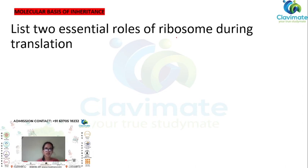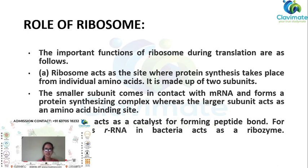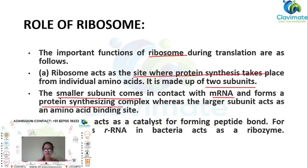These are two essential roles of the ribosome during translation. Some important functions of the ribosome are: it acts as a site where protein synthesis takes place. It is made up of two subunits. The smaller subunit comes in contact with mRNA and forms a protein-synthesizing complex, whereas the larger subunit acts as the amino acid binding site.